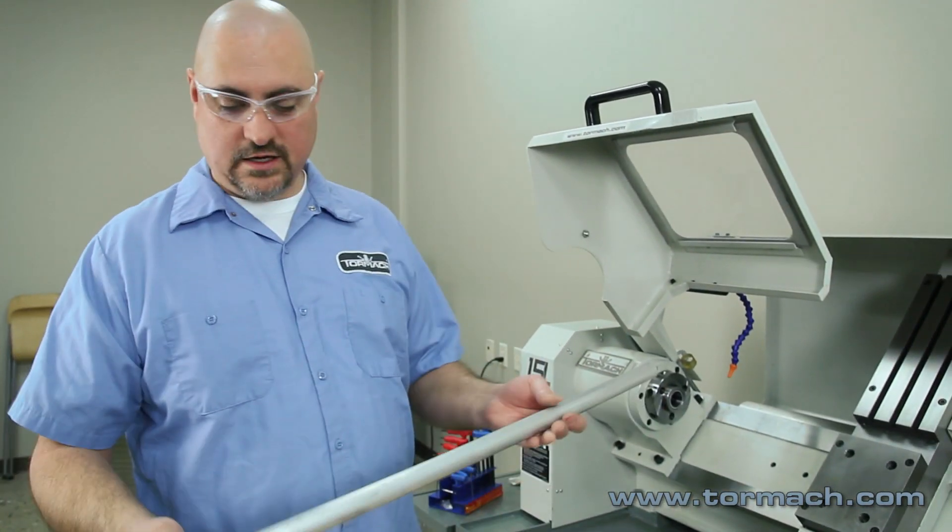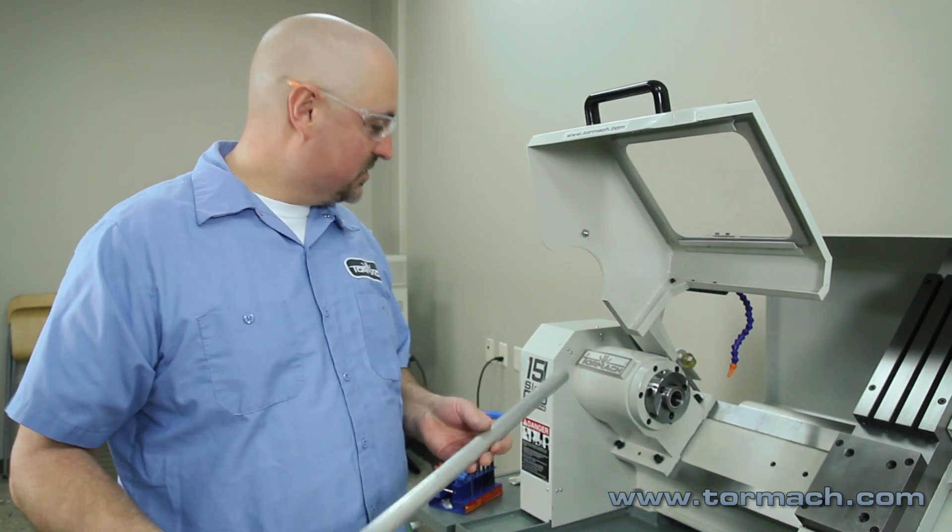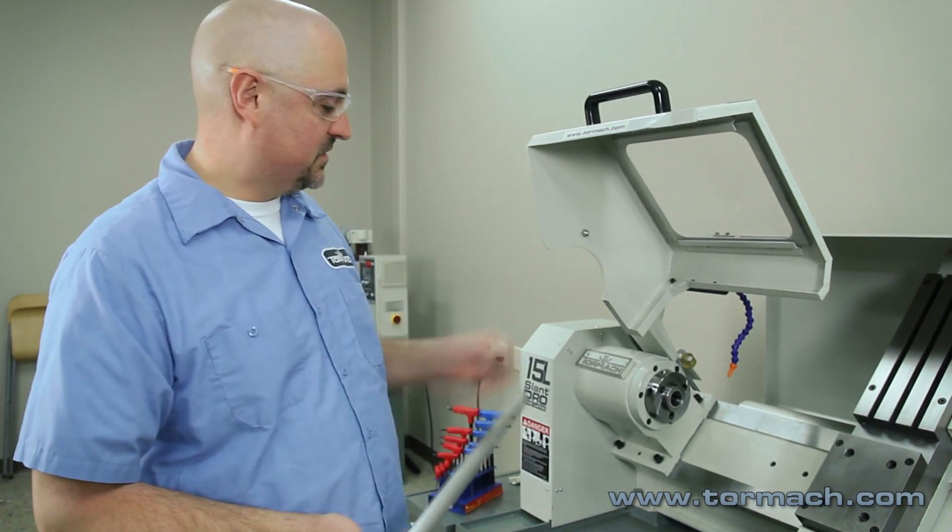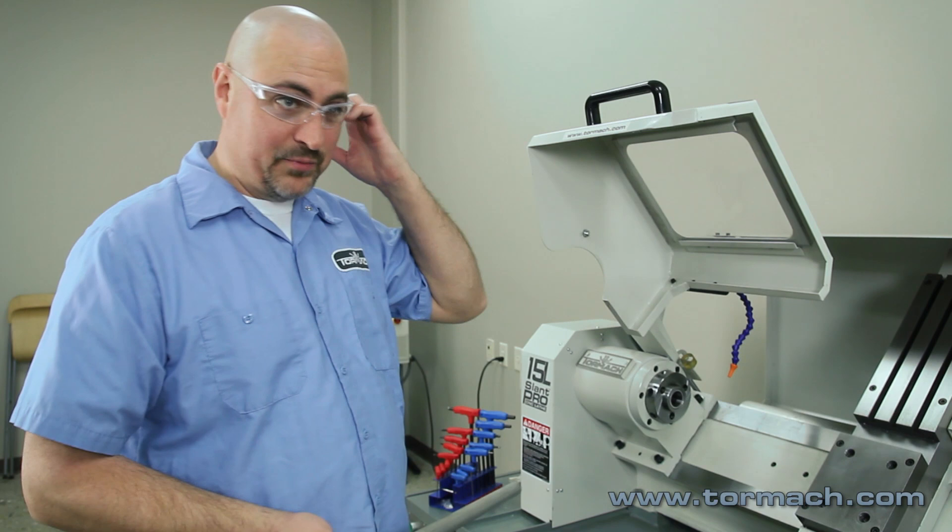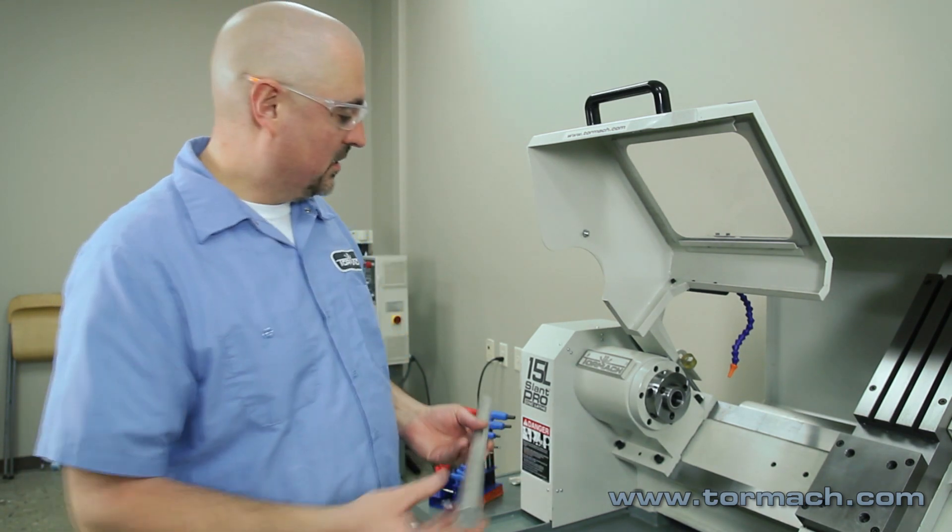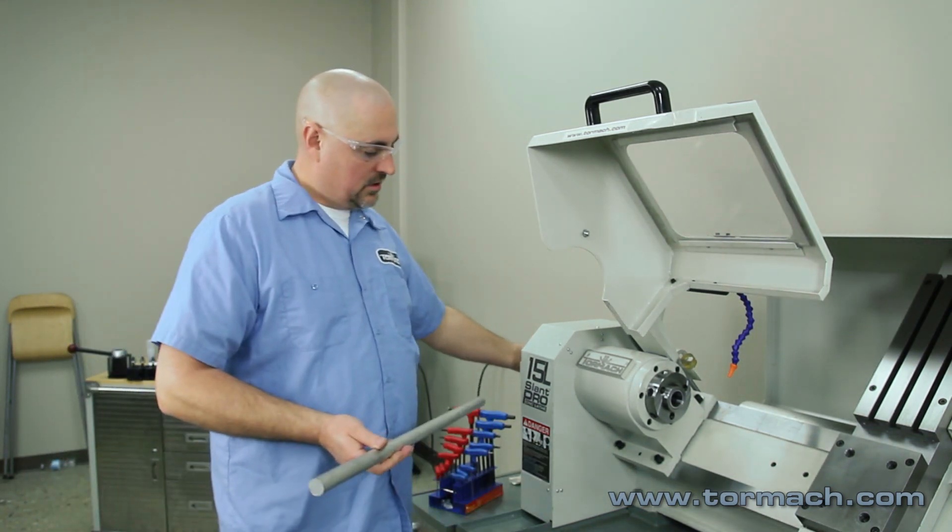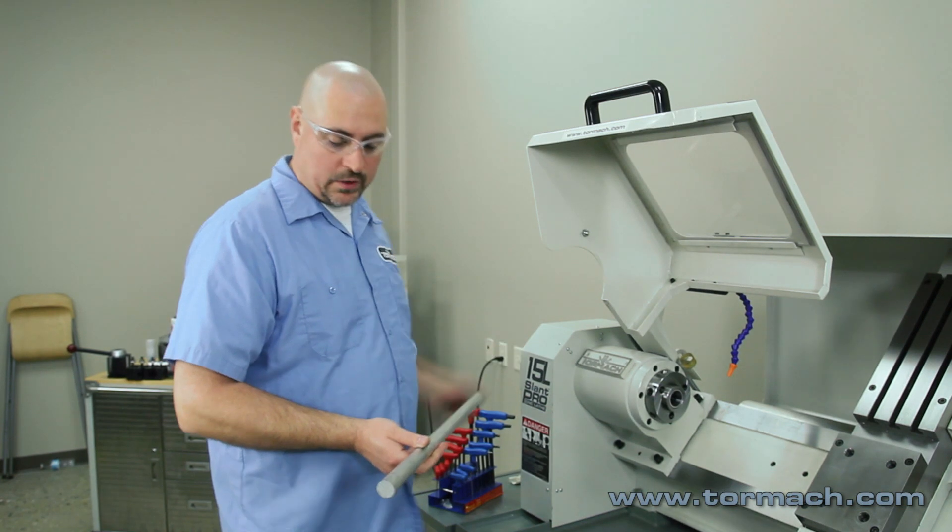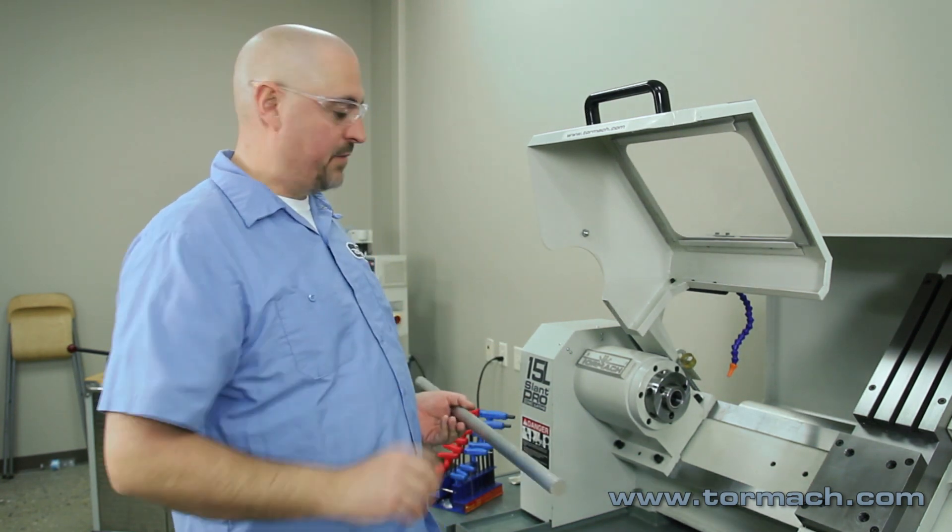To pop that out, just take an aluminum bar. You can use a steel bar. I prefer aluminum just so you don't mar things up as much. The closer you get it to the diameter of your through spindle bore, the squarer it's going to hit on the back side of that insert.